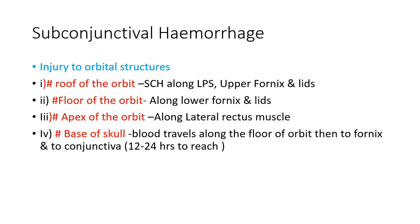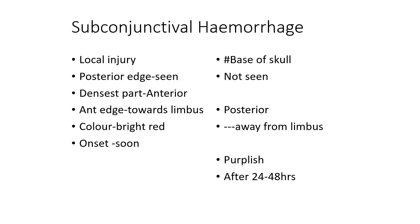In fracture of the base of the skull, blood travels along the floor of the orbit to the fornix and conjunctiva, generally taking 12 to 24 hours to reach the conjunctiva. In local injury, the posterior edge is visible, but in fracture of the base of skull, the posterior limit cannot be seen. In local injury, the anterior edge is towards the limbus, the color is bright red, and onset is immediate. In fracture base of skull, the color is purplish and appears after about 24 hours.